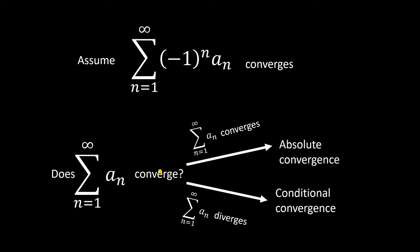Another thing you might need to be familiar with when dealing with alternating series is the difference between absolute and conditional convergence. If you concluded that the series converges by the alternating series test, to determine whether it converges absolutely or conditionally, just look at the series without the (−1) part. If that series on its own converges, then we have absolute convergence. If it diverges without the negative 1, then it's conditional convergence — the reason being that whether the series converges or not is conditional on whether the negative 1 is there.